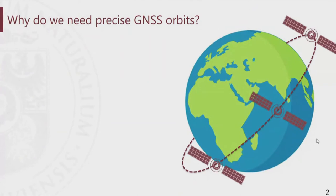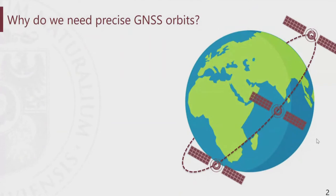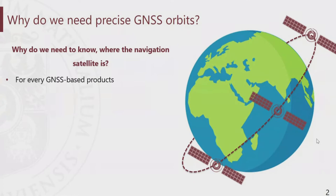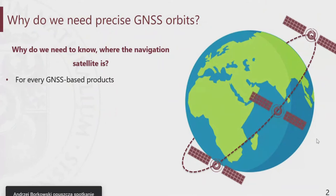In the beginning, let's answer some fundamental questions. Why do we need to know where the navigation satellite is? The GNSS orbits are used for high precision GNSS products — starting from absolute positioning, where the absolute positions depend on the quality of the orbit — through the determination of the global geodetic parameters, and ending on sea level monitoring.